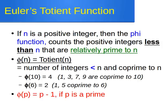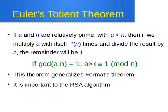So with a = 5 and n = 6, phi of 6 is 2. We raise a to the power of phi of n, which is 5² = 25. If we divide 25 by 6, the remainder is 1. Formally, if the GCD of a and n is 1, then a raised to the power phi of n is congruent to 1 modulo n. This theorem is a generalization of Fermat's little theorem and is fundamental to the RSA algorithm.